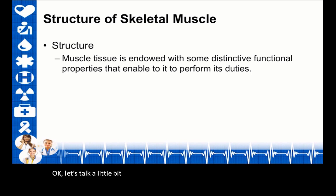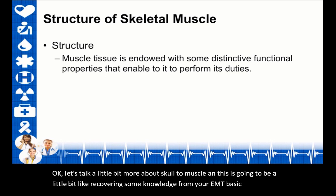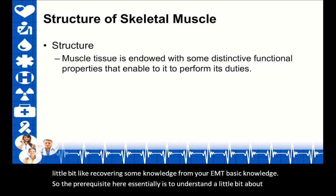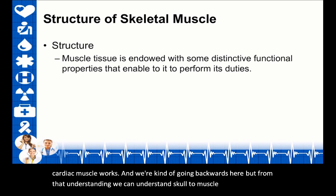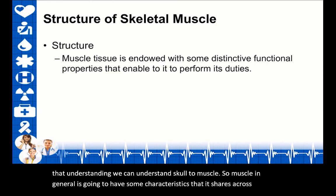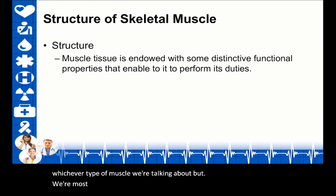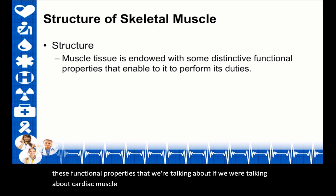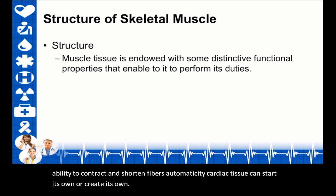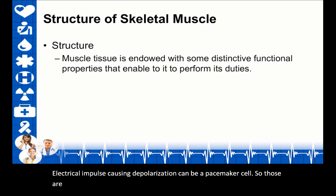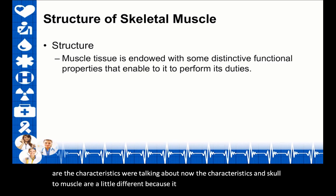Let's talk more about skeletal muscle, which requires some prerequisite cardiac muscle knowledge. Muscle in general shares characteristics across types, but we're most concerned with skeletal and cardiac. Functional properties include contractility—the ability of the muscle fiber to shorten when stimulated—and for cardiac muscle specifically, automaticity, the ability to create its own electrical impulse causing depolarization, acting as a pacemaker cell.